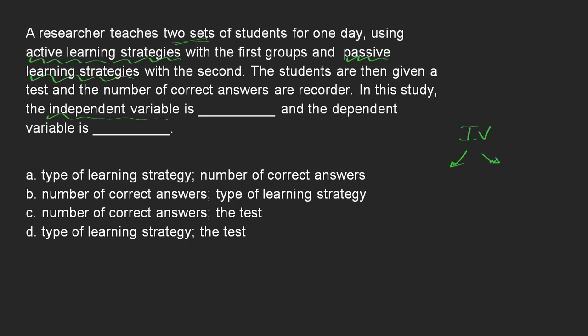So I'll just put that: it is active learning strategies with the first group and passive learning strategies with the second group. So my independent variable is going to be what kind of strategy?